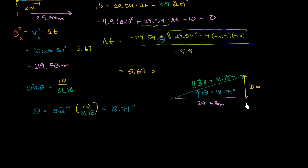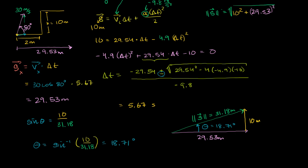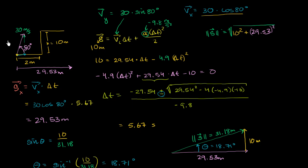So we've constructed the total displacement vector from its vertical and horizontal components. The projectile's total displacement is 31.18 meters at 18.71 degrees above the horizontal. As for how far along the platform it lands — since the platform starts 2 meters to the right, the answer is 27.53 meters along the platform.